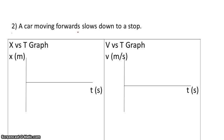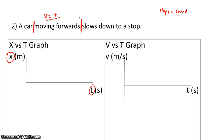Let's try another one: a car moving forward slows down to a stop. Moving forward means my velocity is positive. For the position versus time graph, slope is speed. So if I'm moving forward with a positive speed, I must have a positive slope at the beginning. Then it slows down — my speed is decreasing, so my slope must also be decreasing, going from a large slope to less of a slope. Eventually it comes to a stop: zero speed, zero slope.